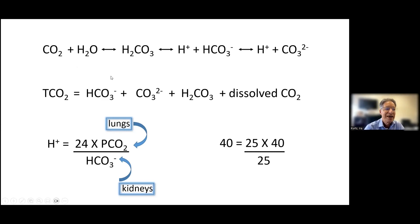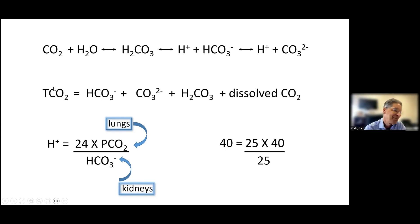We can get something called the total CO2, which represents the total concentration of all four carbonate species: dissolved carbon dioxide, carbonic acid, bicarbonate, and carbonate. That's what you get back when you get chemistry from blood — what's called the total CO2. Please do not call it bicarbonate and please do not call it CO2. It's the total CO2 content of blood.